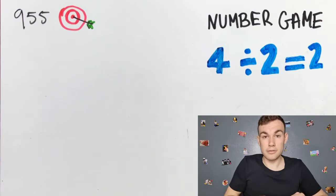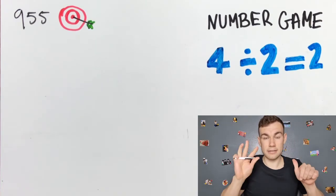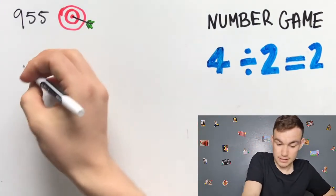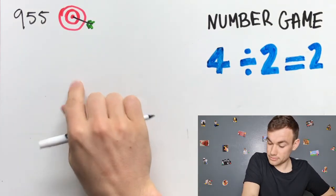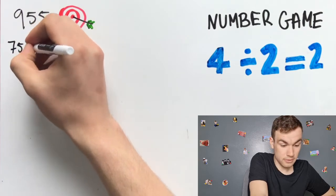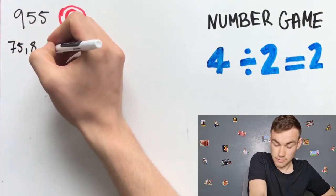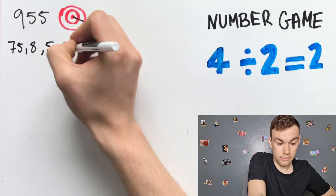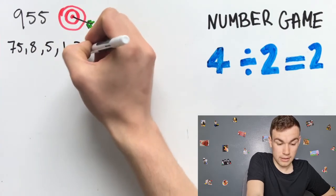To do that, we have six smaller numbers. For this example, they are 75, 8, 5, 1, 3, and 10.